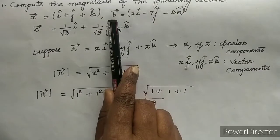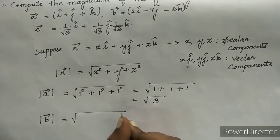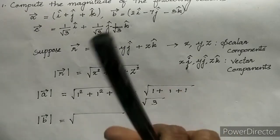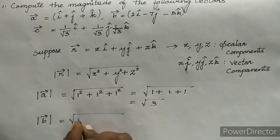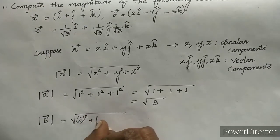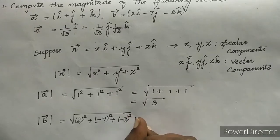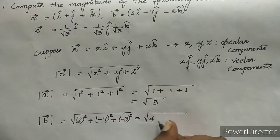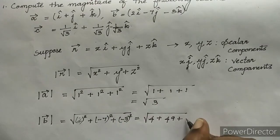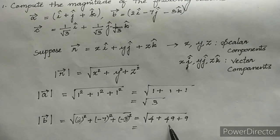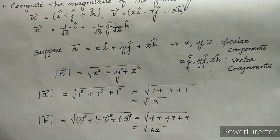Next, we are going to find the magnitude of B vector. Magnitude of B vector is equal to the square root of the sum of squares of the scalar components. Here in the B vector, the scalar components are 2, −7, and −3. So we compute √(2² + (−7)² + (−3)²), which equals √(4 + 49 + 9). Adding 4 + 49 + 9 gives 62, so the magnitude of B vector is √62.